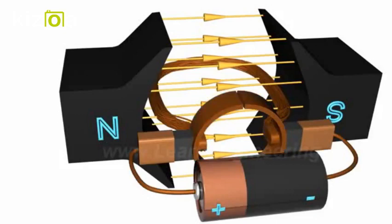When the current flows through the coil, an electromagnetic force is induced on it according to the Lorentz law, so the coil will start to rotate.